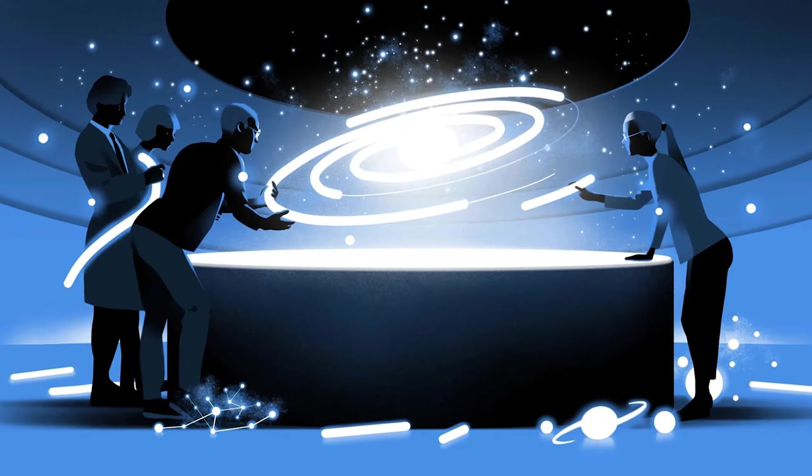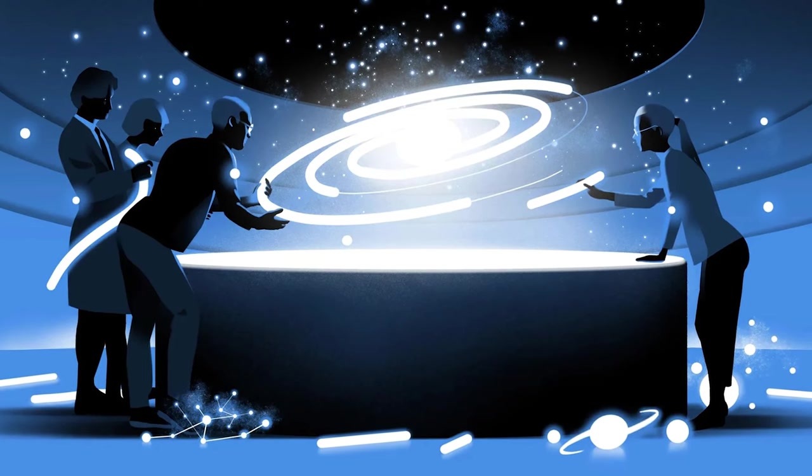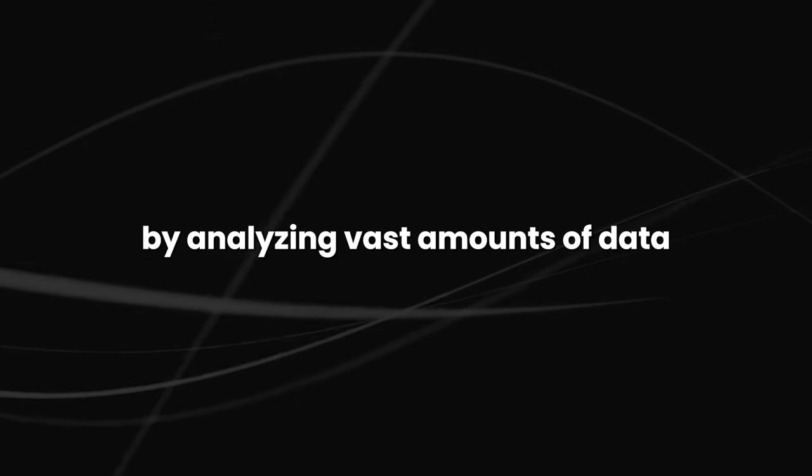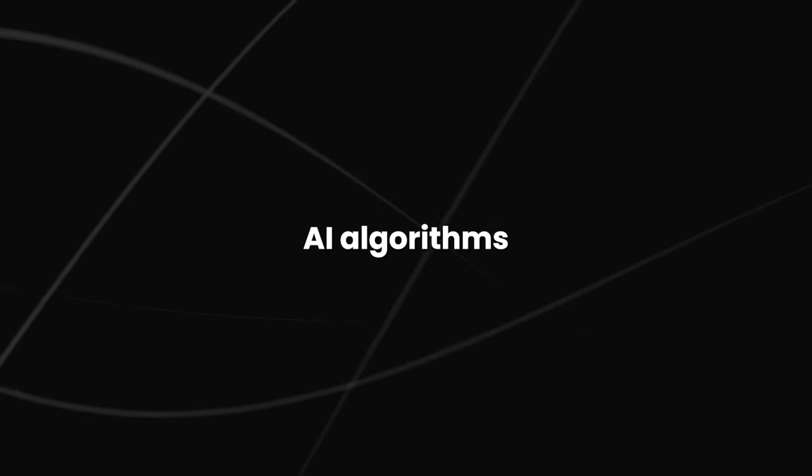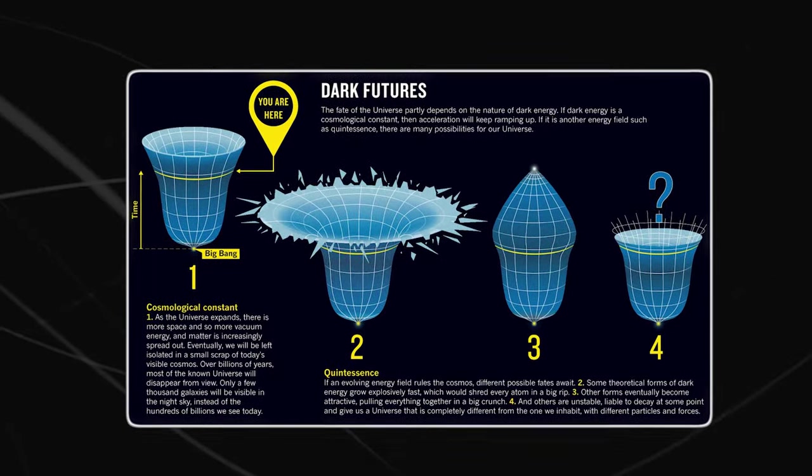AI is helping scientists study the distribution of galaxies and other astronomical objects to learn more about these two elusive substances. By analyzing vast amounts of data, AI algorithms are beginning to shed light on the nature of dark matter and dark energy.